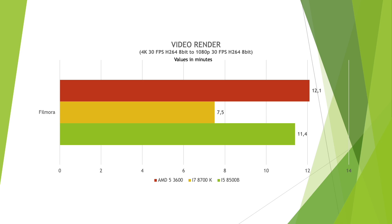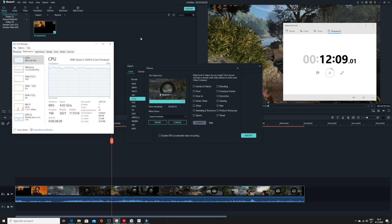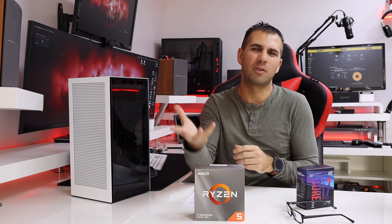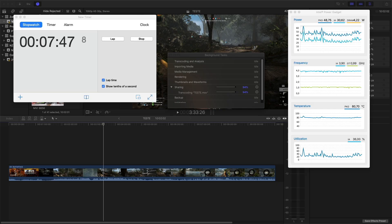For the final test in Filmora, the i7 finishes in 7 minutes and 50 seconds, followed by the Mac Mini at 11 minutes and 40 seconds, and then the AMD at 12 minutes and 10 seconds. Again, my suspicion is Intel QuickSync being well-implemented in this software. Just out of curiosity, I also tested Final Cut Pro 10 — the tool I use daily — and the result was also 7 minutes and 50 seconds.